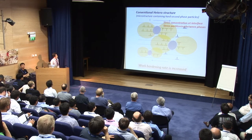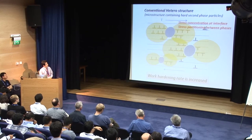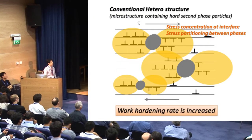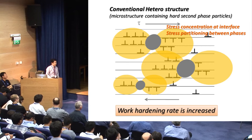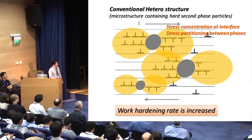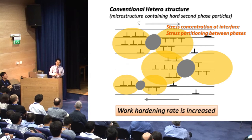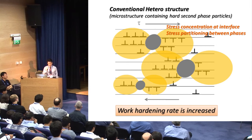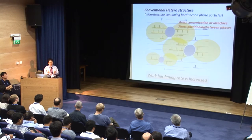Therefore, stress concentration would occur at the interface due to the discontinuity of plastic deformation. At the same time, macroscopic stress partitioning would also occur between phases, and as a result, the work hardening rate of this material would be increased. This leads to an enlargement of uniform elongation, because the occurrence of plastic instability is shifted to a higher strain region.